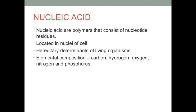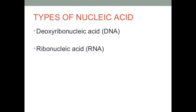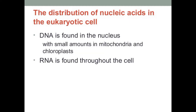Nucleic acids are polymers that consist of nucleotide residues located in the nucleus of the cell. They are the hereditary determinants of living organisms. The elemental composition of nucleic acid includes carbon, hydrogen, oxygen, nitrogen, and phosphorus. There are two major types: deoxyribonucleic acid (DNA) and ribonucleic acid (RNA).